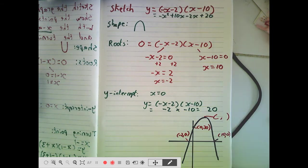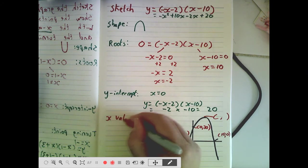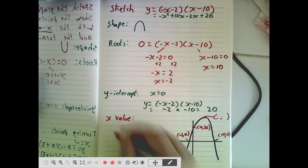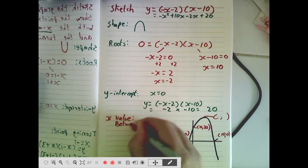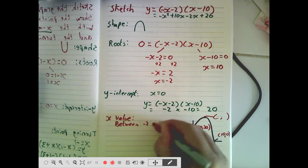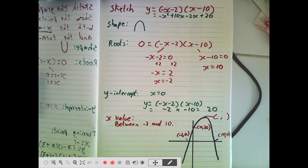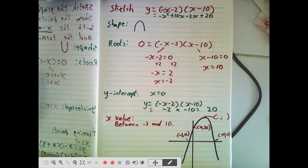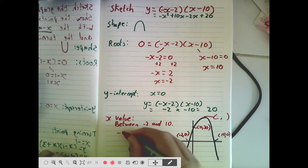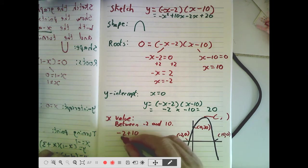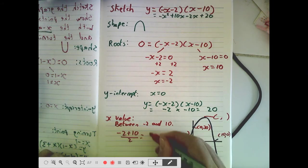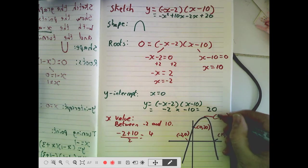So finding the turning point, we can use a little bit of symmetry. The x value is going to be halfway. So the x value of the turning point is going to be halfway between minus 2 and 10. So what number is halfway between minus 2 and 10? We can have a go at adding that up and dividing it by 2. Minus 2 plus 10 divided by 2 is 4. So this value here is 4.